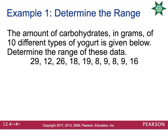For example, the amount of carbs in grams of 10 different types of yogurt is given. We need to determine the range of this data. The highest value is 29, and the lowest value is 8. So our range equals 29 minus 8, which is 21.